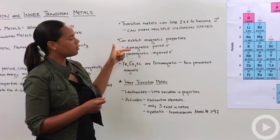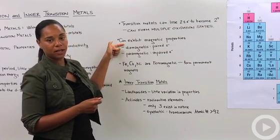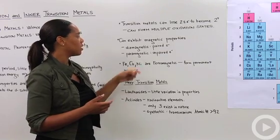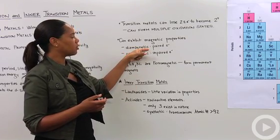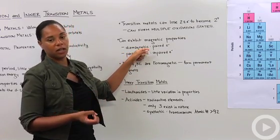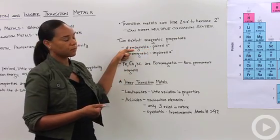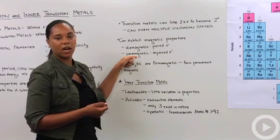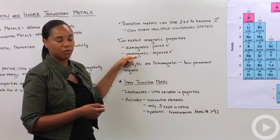So the transition metals can also exhibit magnetic properties as a result of being able to have unpaired electrons. So if in the electron configuration you have paired electrons, then we call that diamagnetic. And if you actually have unpaired electrons, then we say that that element or compound exhibits paramagnetic properties.